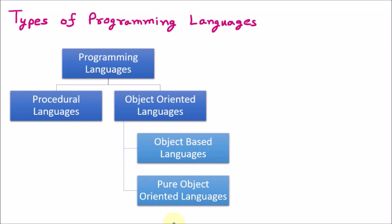Okay everyone, now we are discussing the topic of types of programming languages. There are so many programming languages, but there are some categories into which we can divide them. So all the programming languages can be divided into two categories, as we can see in the diagram.